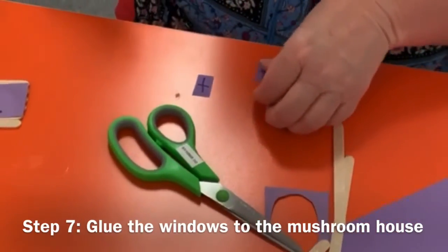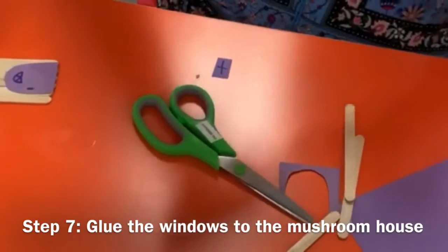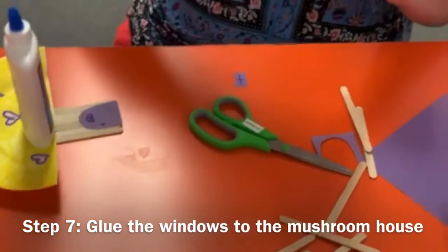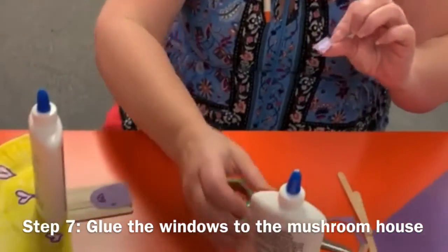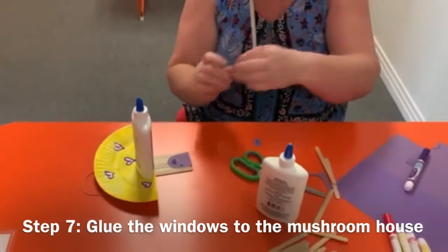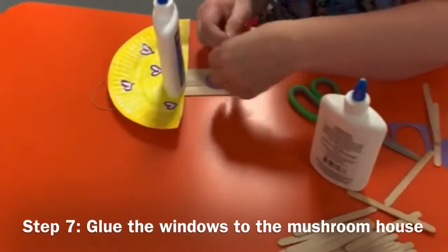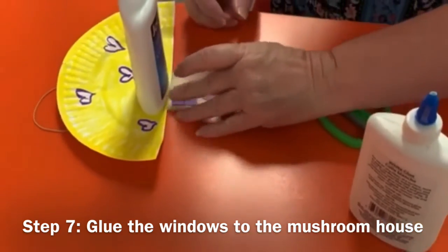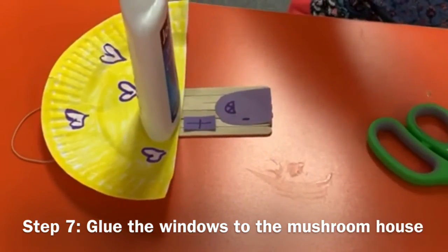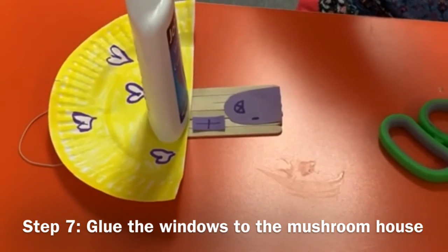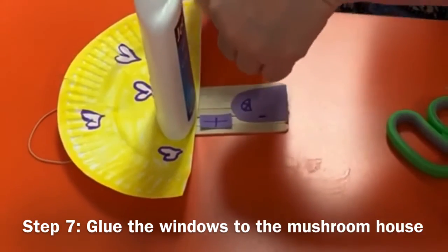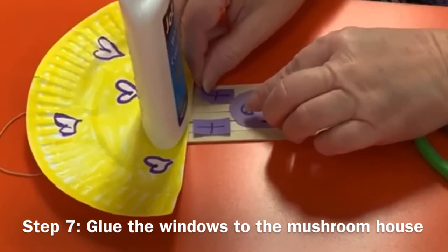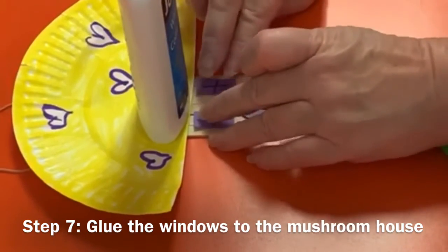And then we're just going to put a dab of glue. Now, if you have a glue stick, you could use a glue stick also. If you have glue glue, just open it just enough that you get a little glue out. Not that it comes pouring out. Because if it comes pouring out, then it makes a big mess. One. And. Two. There we go. We've got two windows.